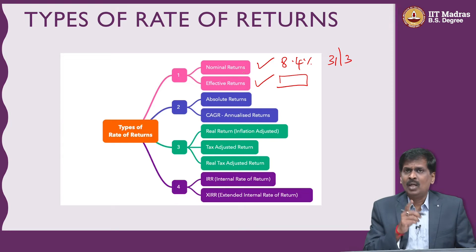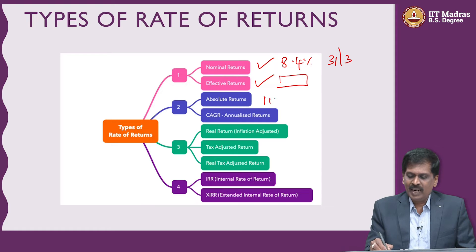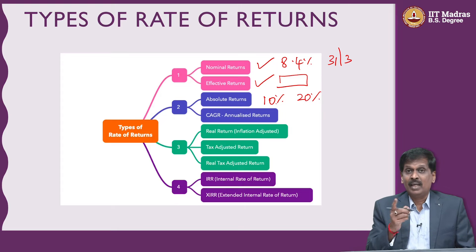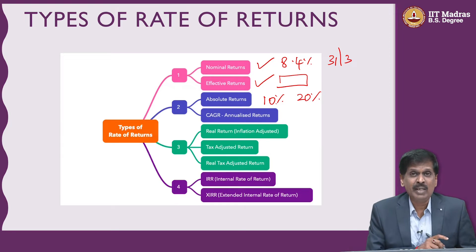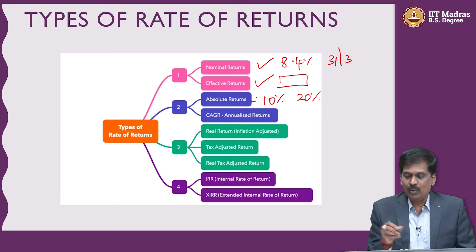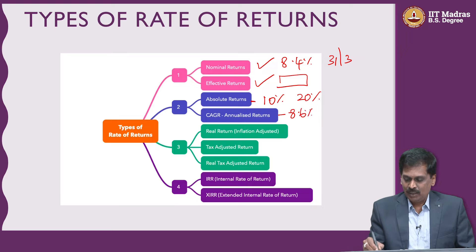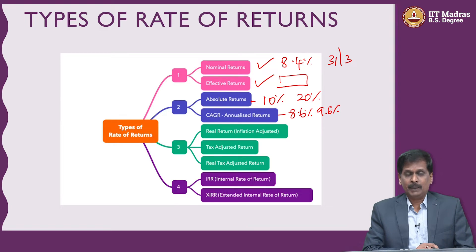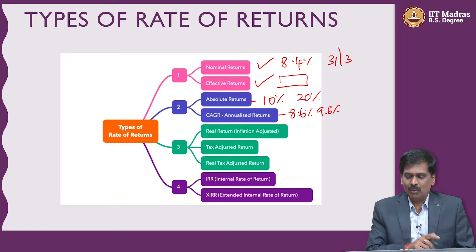The next thing — in the previous video we talked about two real estate examples where somebody claimed their absolute return per annum was 20 percent and 10 percent. In the case of the plot we talked about 20 percent, and in the case of the apartment he said 10 percent — those are called absolute returns. But when you looked at the CAGR returns in the previous example, you saw 8.6 percent and 9.6 percent.